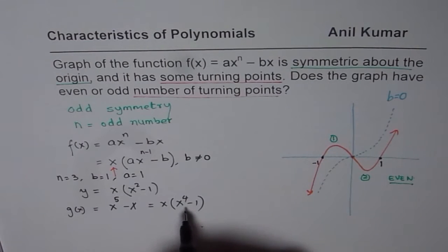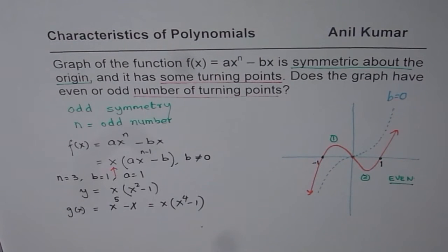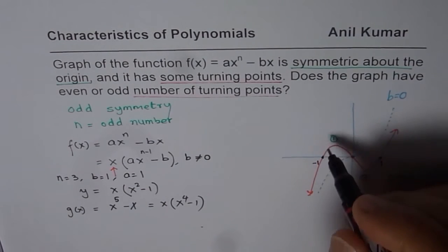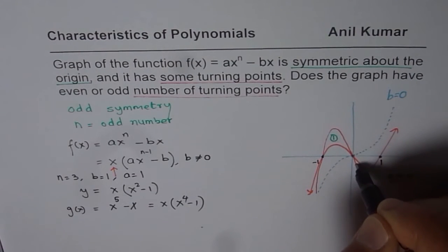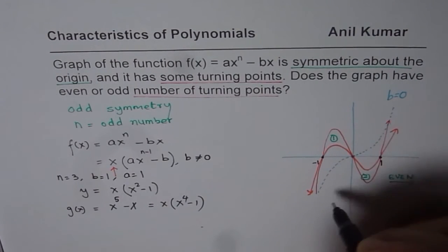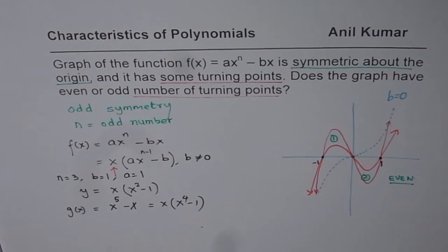However, when the power increases, then it kind of becomes steeper. The zeros are at the same place. So in this particular case, we will notice that the graph is kind of like this, a bit steeper. But still we will have the zeros at two places, symmetric about origin, since the function has odd symmetry. So zeros will be symmetric.